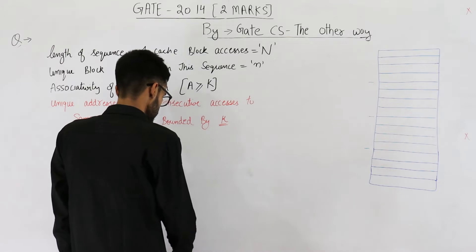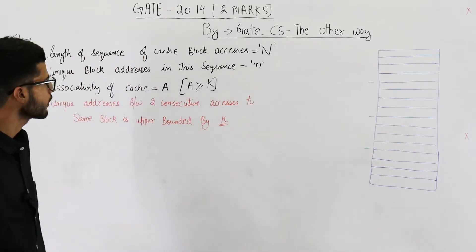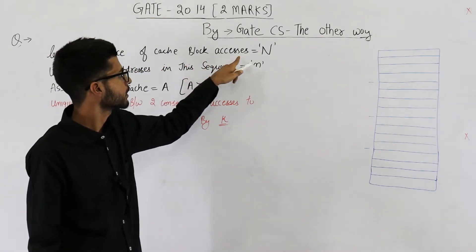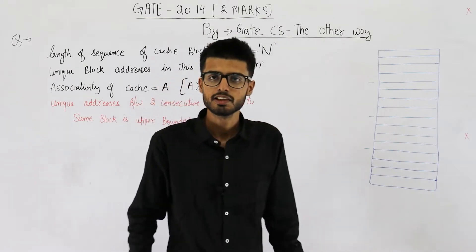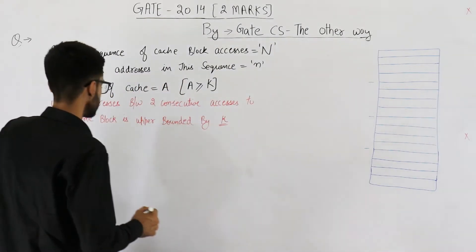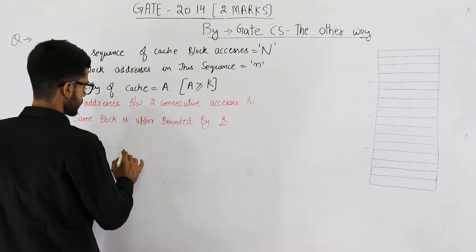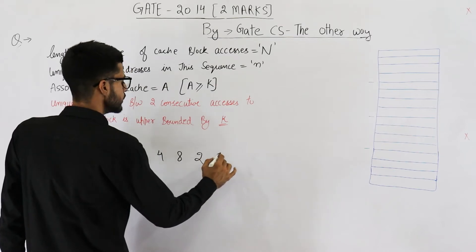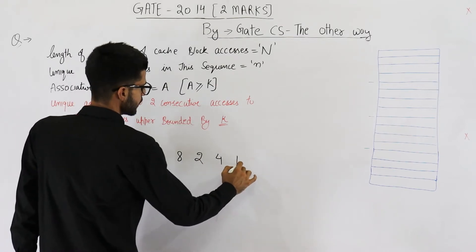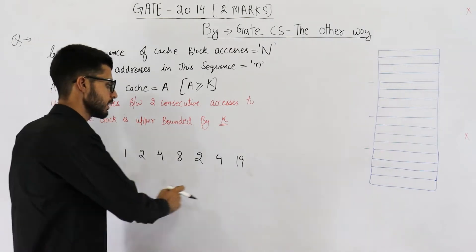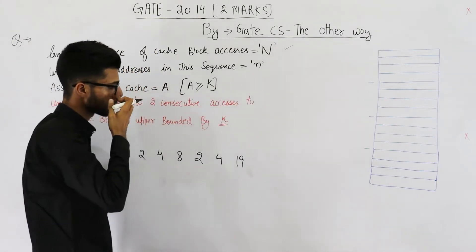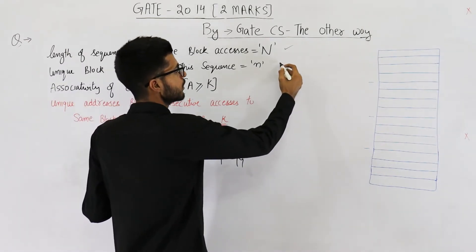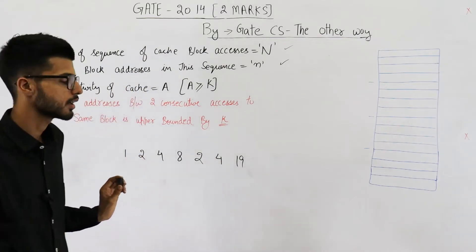They are asking us to find the miss ratio. The length of the access sequence of cache block accesses is capital N. That means the CPU tries to access some blocks — say it asks for block number 1, then 2, then 4, then 8, then 2 again, 4, maybe 19, and so on. The total length of this sequence is capital N. Out of these, we could have repetitions. They are saying we have small n unique accesses.